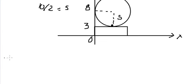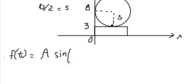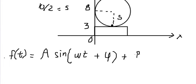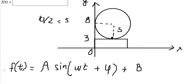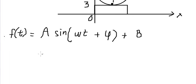Now we have the formula. We can see that the center of the wheel is about 8 meters above the ground, so that should be the value of B, which equals 8.